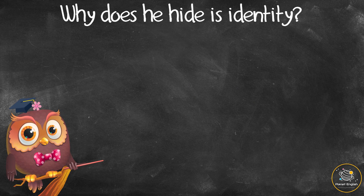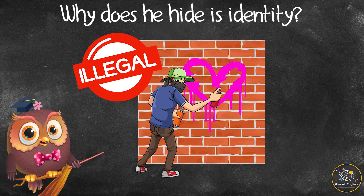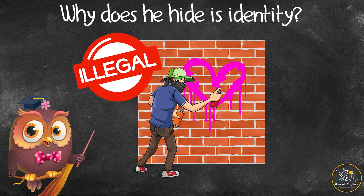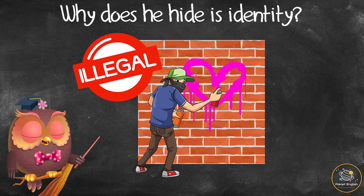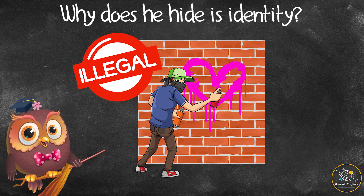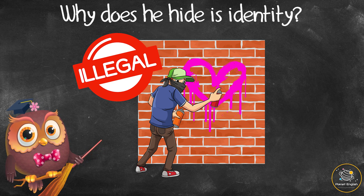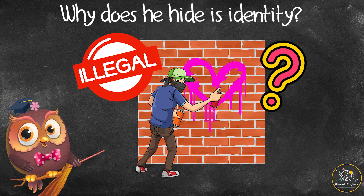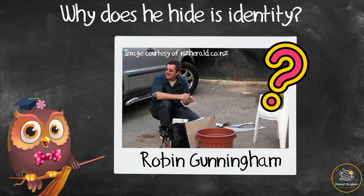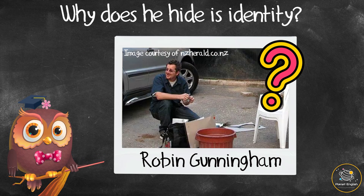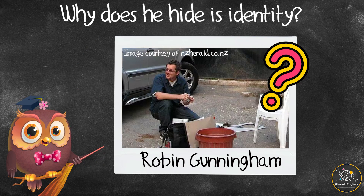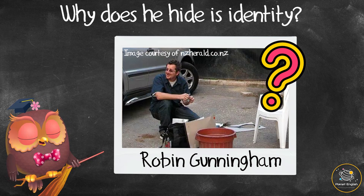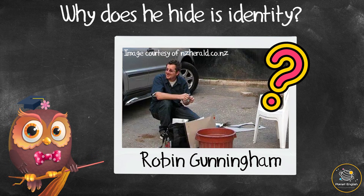Paint or ink is painted over the stencil and this goes through the holes to make a picture. Why does he hide his identity? Most street art and graffiti are illegal, so Banksy has tried to keep his identity a mystery.